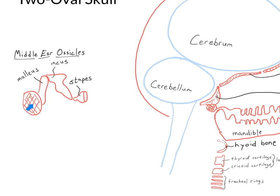They're the three tiniest bones in the body that form a little chain, carrying vibrations of the eardrum through the middle ear cavity to the inner ear, where those vibrations are then picked up by the cochlea and turned into sound information that our brain can interpret. So those three middle ear ossicles are the malleus, the incus, and the stapes.